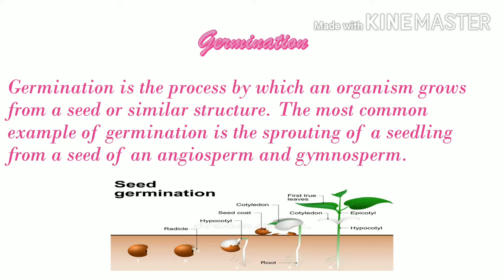The seed is planted in the soil. After some days, we can see the radicle coming out of it; it later develops into the hypocotyl. The root develops and grows below the soil. The seed gets air, water, and warmth. The seed soaks up water, the seed coat breaks, and the root emerges. The new plant develops a root and a shoot.